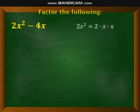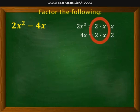First, expand 2x² which is 2 times x times x. Then expand 4x which is 2 times x times 2. Get the GCF common to both terms.